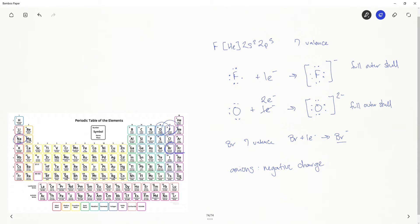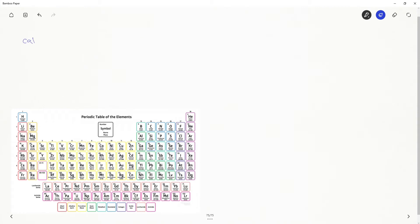Let's clear the page and let's talk about cations. Cations are ions with a positive charge. And just like anions, we'll see that we can predict what the charge is going to be on various cations.